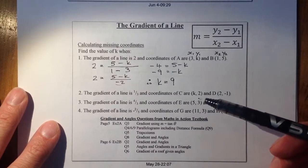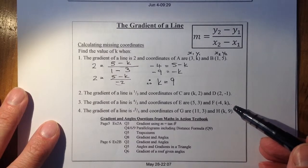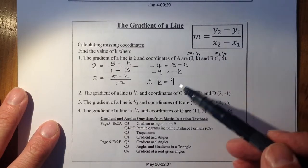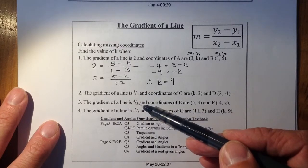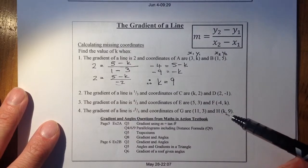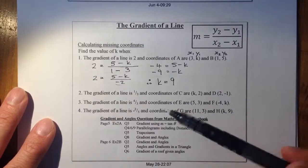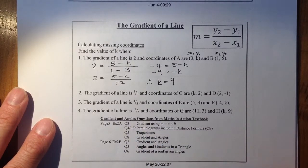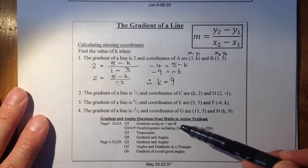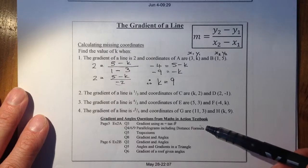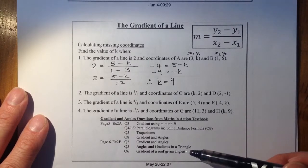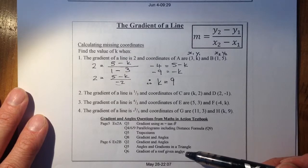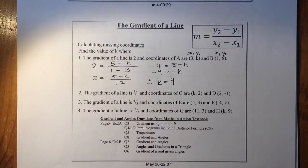Now try questions 2, 3, and 4. Once you've found each missing value, substitute it back to verify your gradient works out to be either one third, 4 over 3, or minus 2 over 5. Further work on gradients and angles is in the Maths in Action textbook — go to pages 5 and 6 for questions on simple gradients, parallelograms, distance formula, trapeziums, gradients and angles, and gradient in context such as the angle of a roof space.